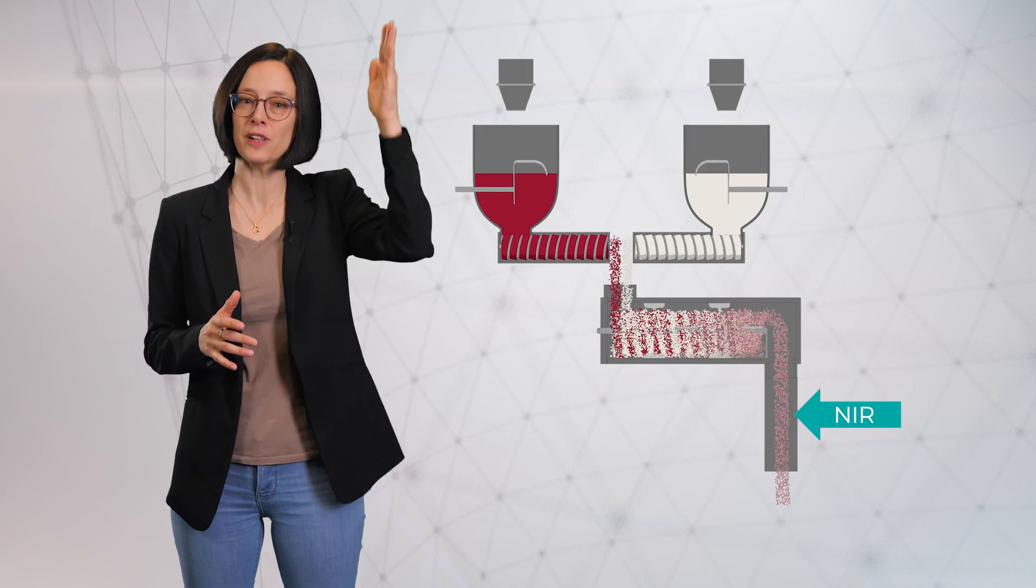In continuous manufacturing, the sampling methods are very different. The sample is not taken out of the bulk. The bulk is analyzed as the material passes by.